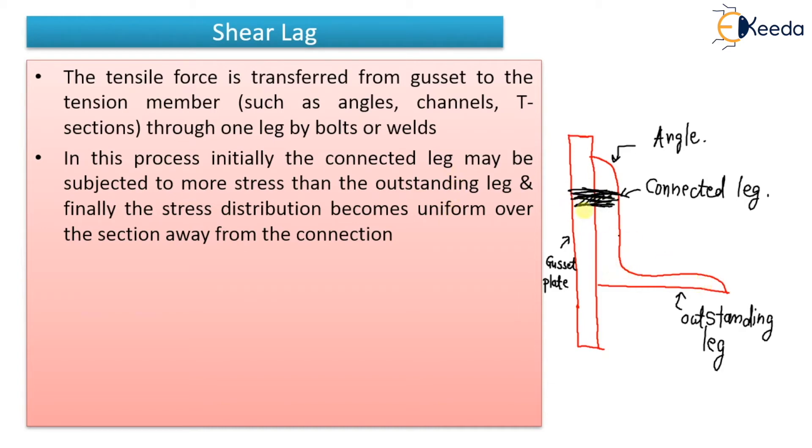This one is the outstanding leg and this one is the connected leg to the gusset plate, and there is a bolt hole in this. So load is getting transferred through this leg, means maximum load is getting transferred through this bolted joint. Then, finally what happens?